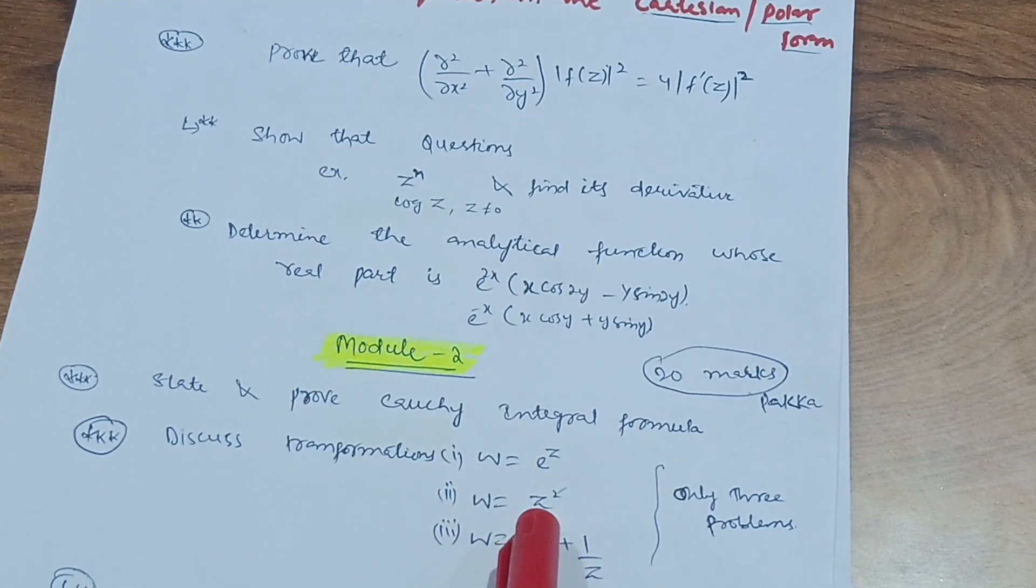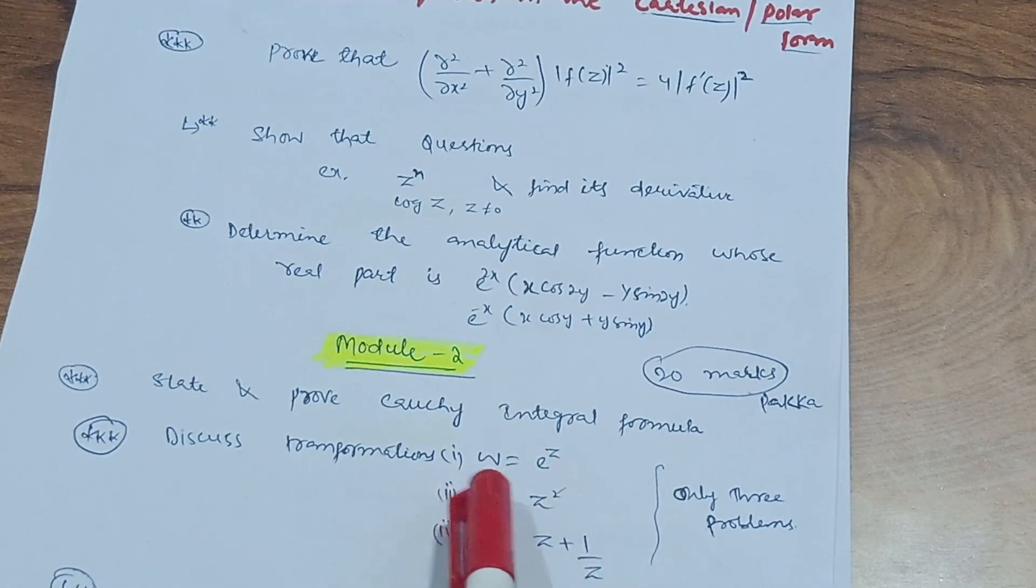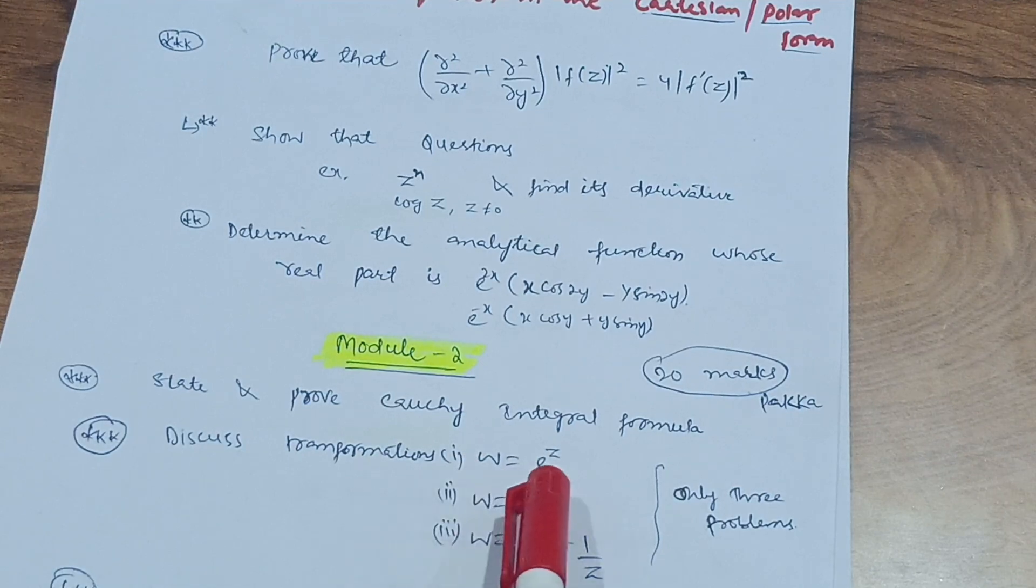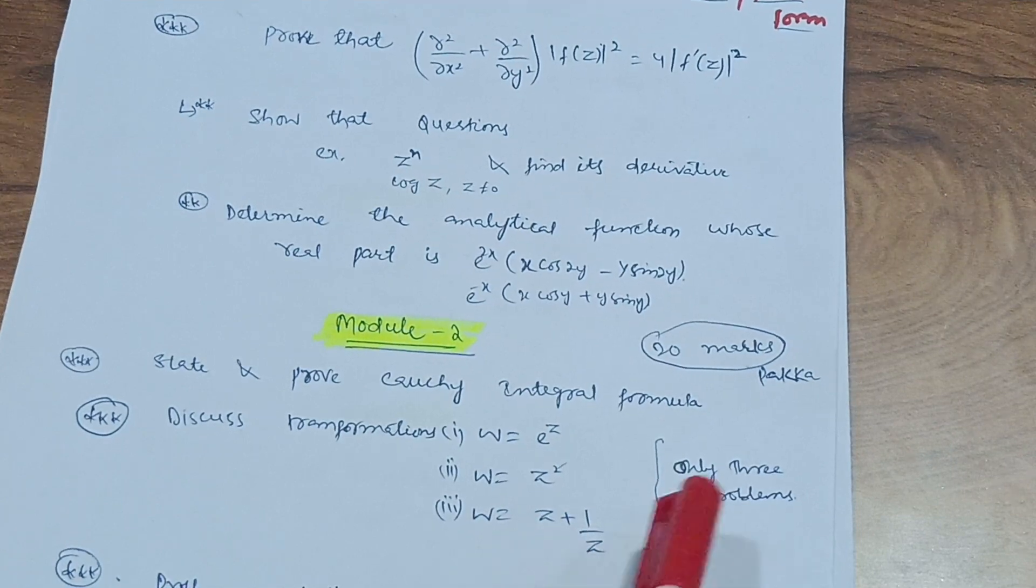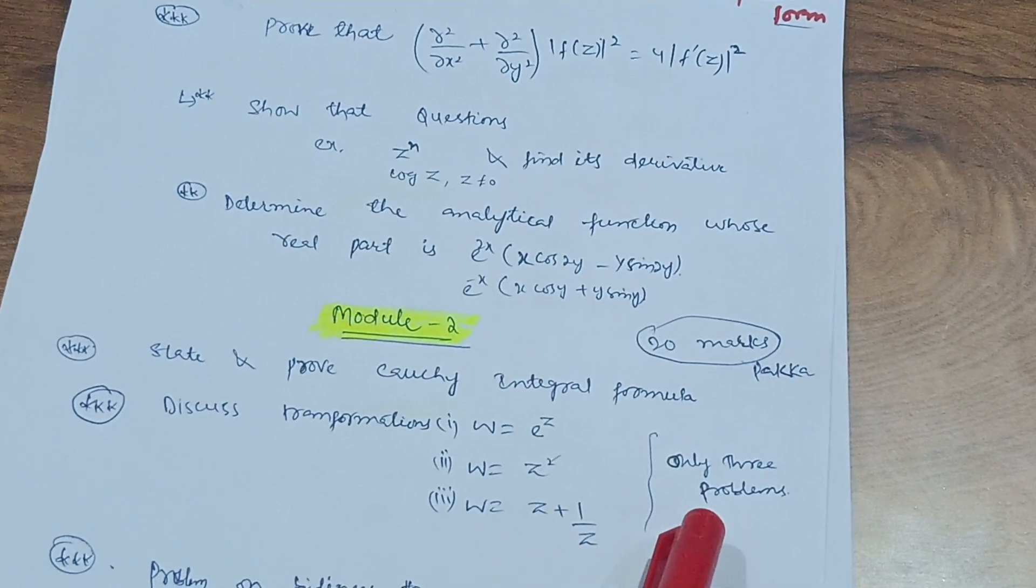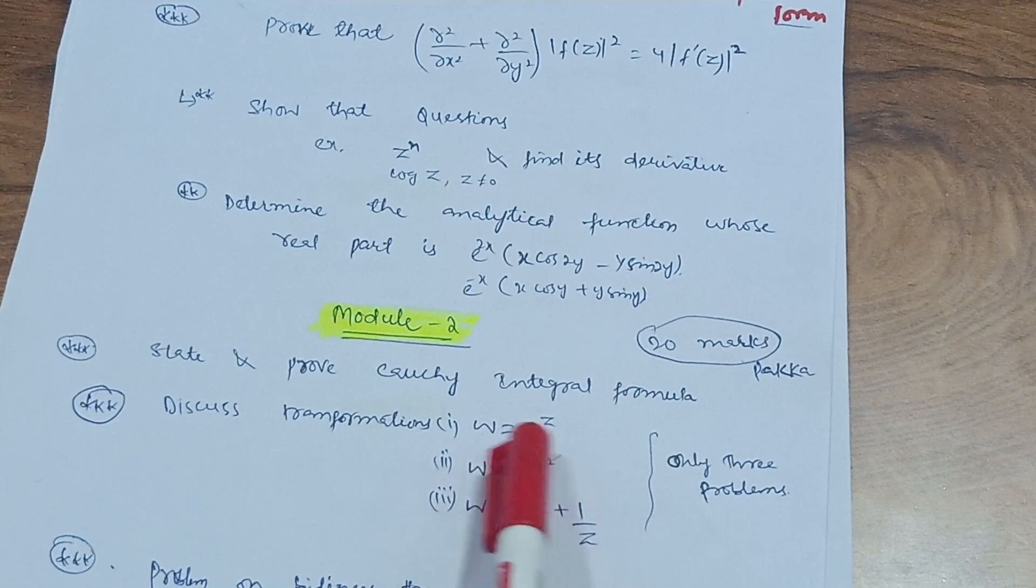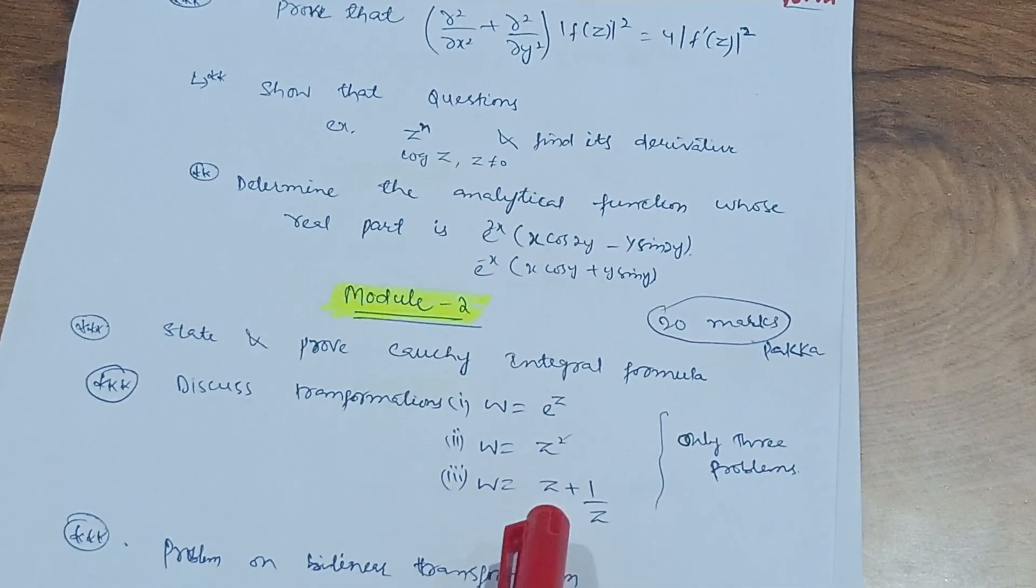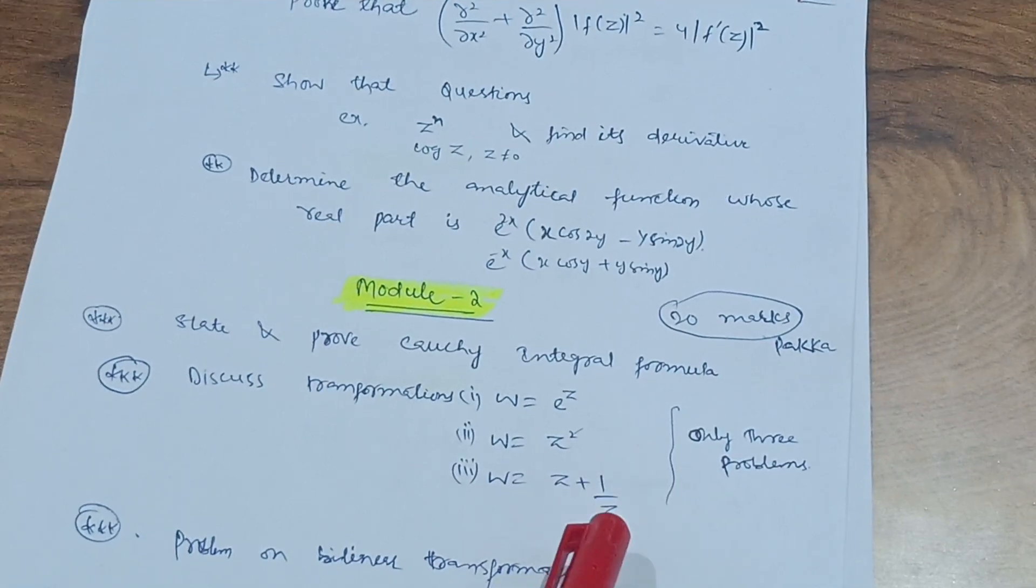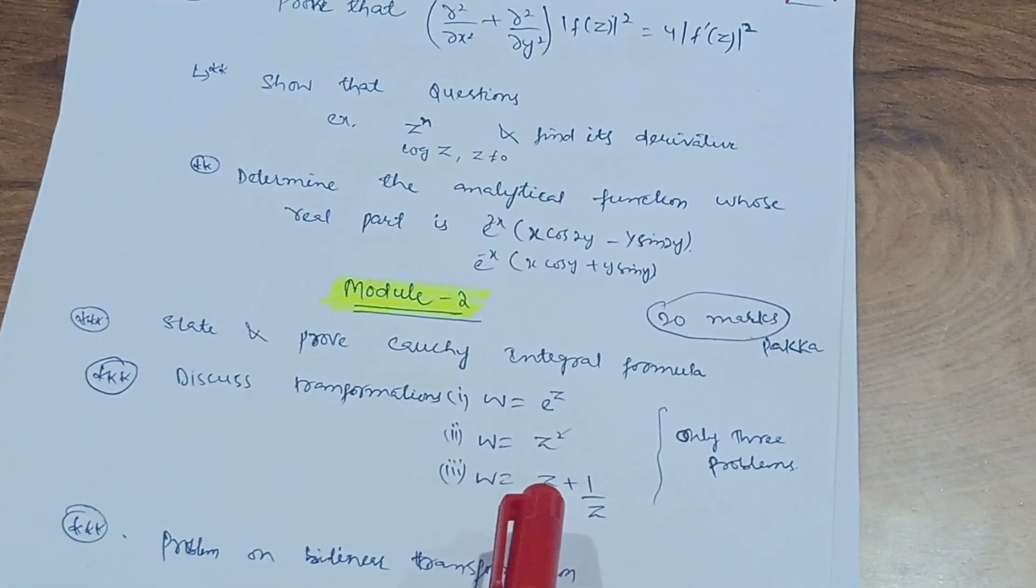Next one is discuss transformation. There are three types of problems which are very very important in this module. You have to discuss transformation of w = e^z, w = z², w = z + 1/z. Only three problems, so there is a chance of one from these three particular transformations.